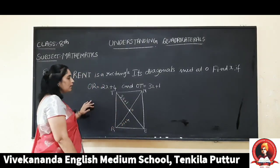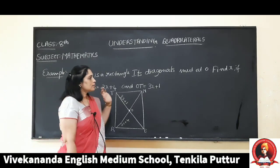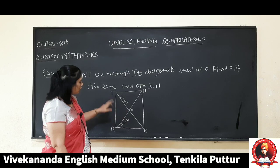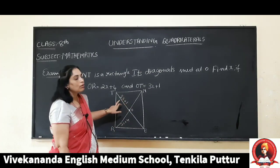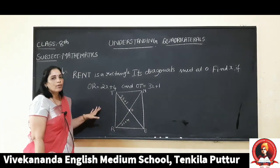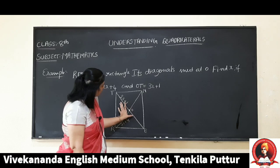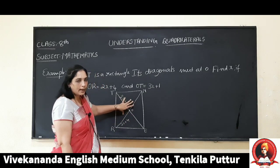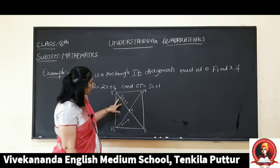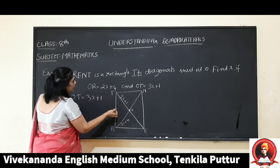Now let us solve an example question. In rectangle RENT, the diagonals meet at point O. Find the x value if OR equals 2x plus 4 and OT equals 3x plus 1. As we studied in the properties of rectangle, the two diagonals are TE and RN. Here the value of OT is given as 3x plus 1.